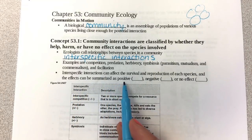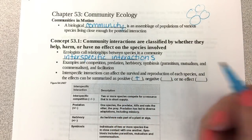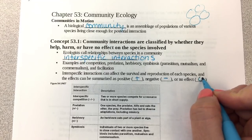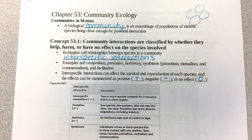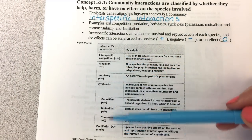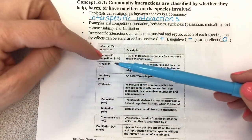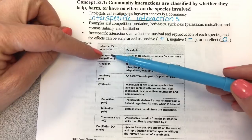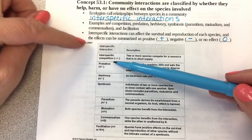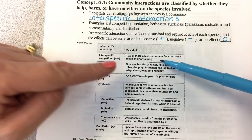The effects can be positive, negative, or have no effect. A plus sign means positive, negative means a negative effect, and zero means neither. This chart shows the different types of interactions. Competition is negative-negative, meaning both organisms are negatively affected — two or more species compete for a resource that is in short supply.